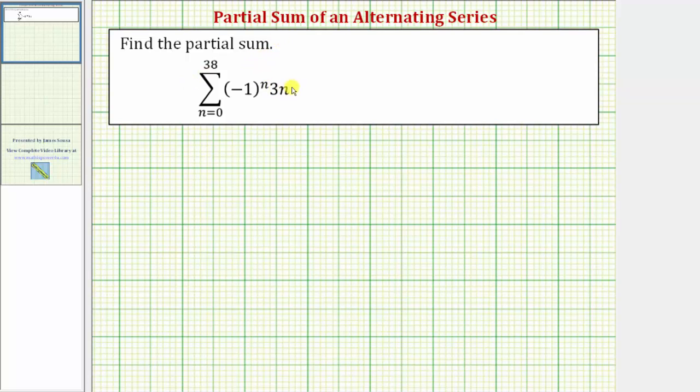We're going to find the partial sum. Looking at our formula, notice how because we have negative one raised to the power of n, we have an alternating series where when n is odd the term would be negative. When n is even, the term would be positive.